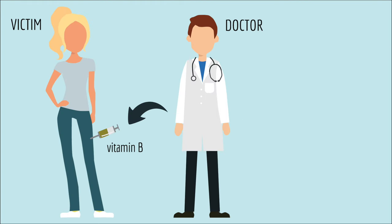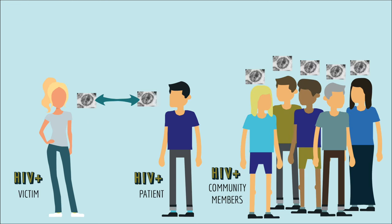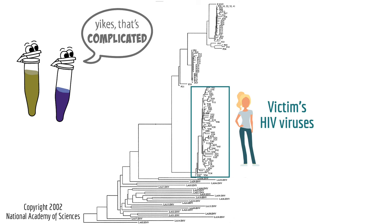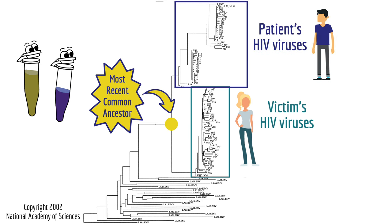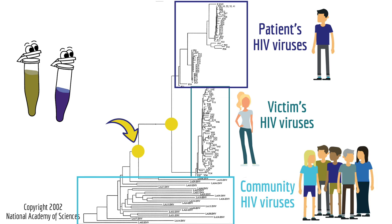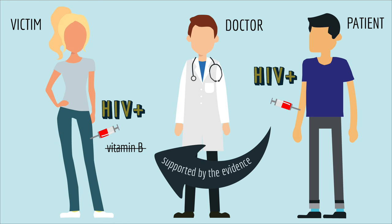Remember the doctor and the victim? The scientists predicted that if the doctor infected the victim with HIV from the patient, then the victim's HIV viruses should be most closely related to the patient's HIV viruses. Here are the results. These are the HIV viruses from the victim. It turns out that HIV mutates so rapidly that there are genetically different viruses, even in one person. And these are the viruses from the patient. And the most recent common ancestor between them is here. And the most recent common ancestor between the victim and anyone else in the community is back here.